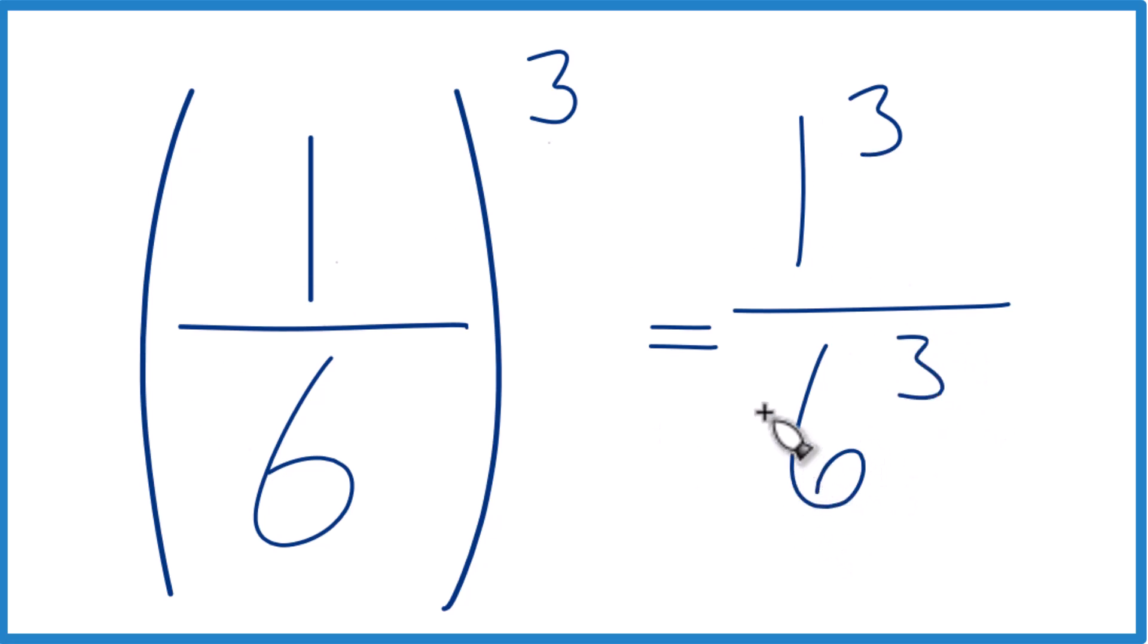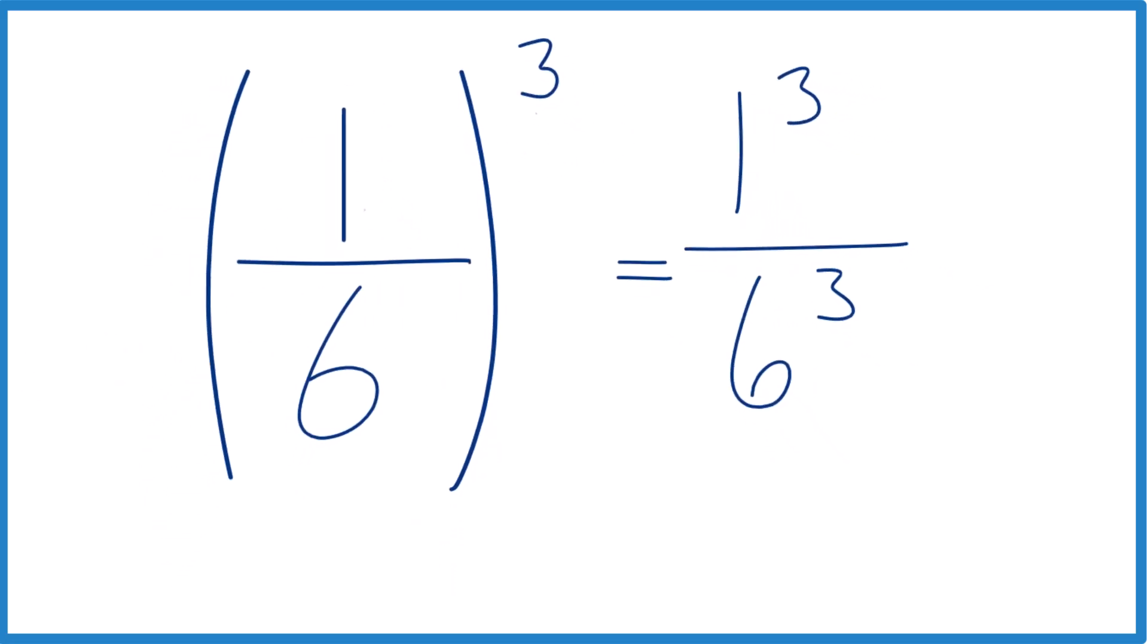So these are the same thing. Because if you think about it, it's 1/6 times 1/6 times 1/6. That gives us 1/3. And so we could just say 1/6 times 1/6 times 1/6.